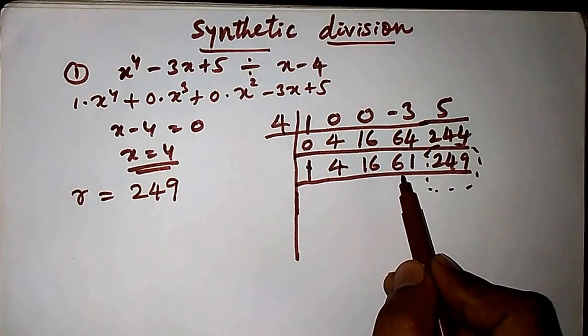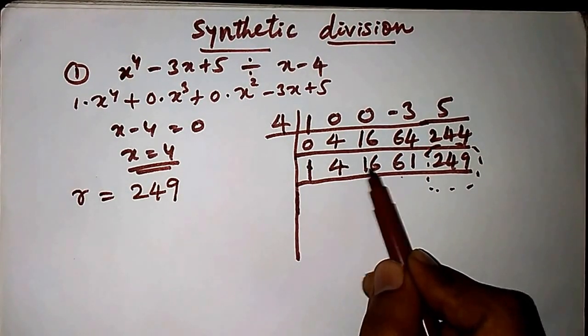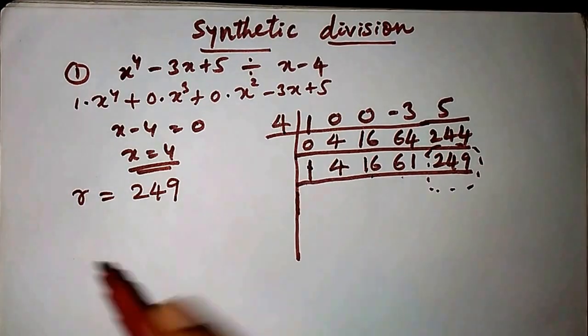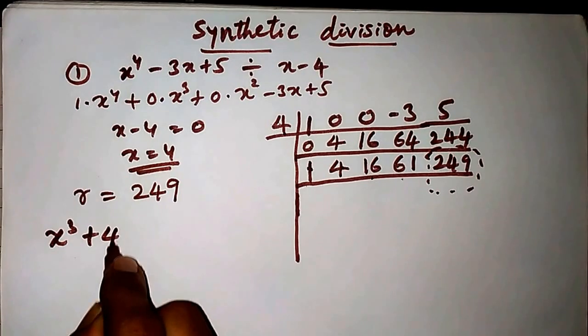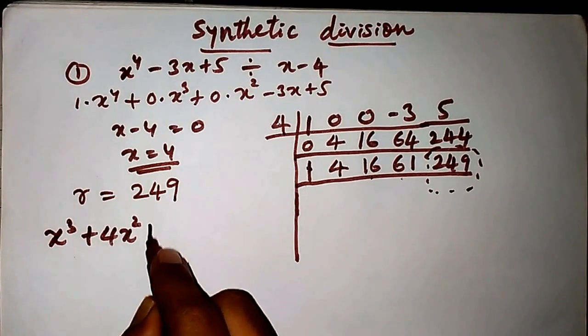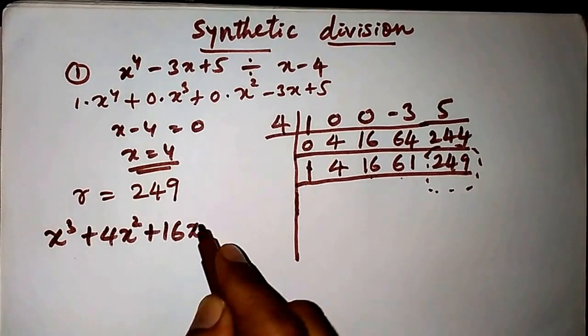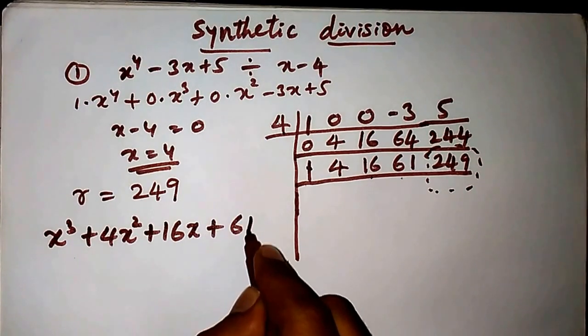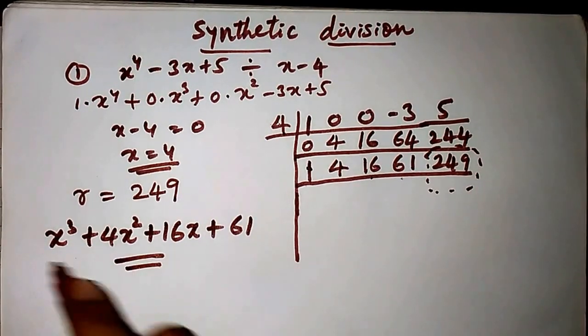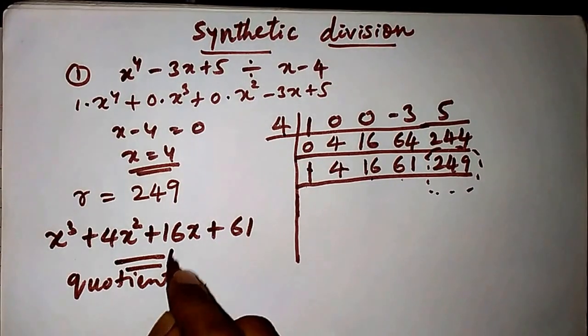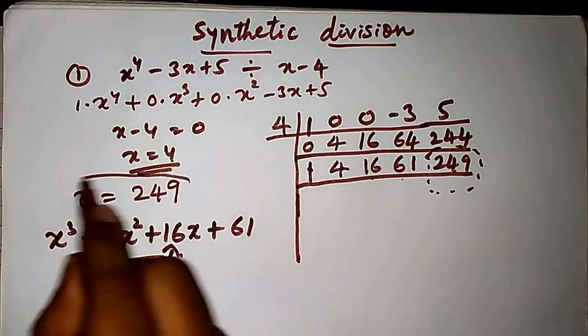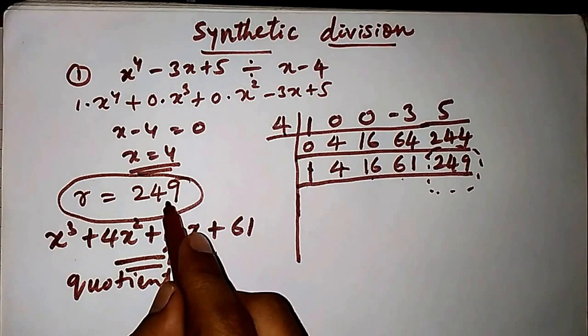Start from here: this is a constant, next is x, x square, and x cube. So x cube plus 4x square plus 16x plus 61 is the quotient, and the remainder is 249.